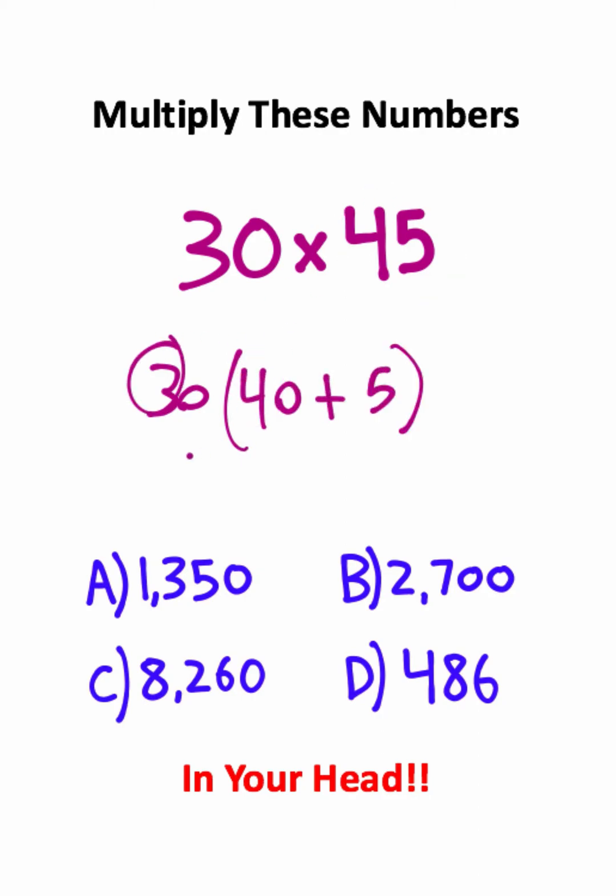Three times four is twelve, but then we need to add two zeros. Three times five is fifteen, and then you add a zero to that.